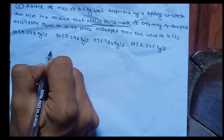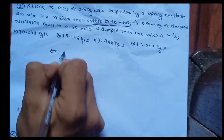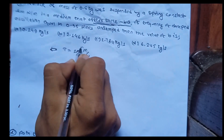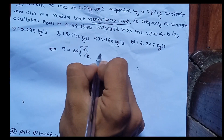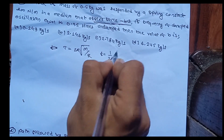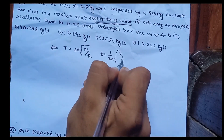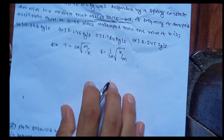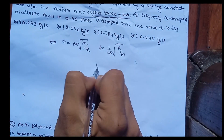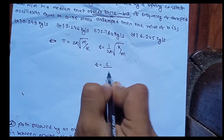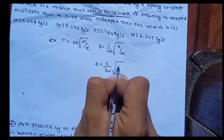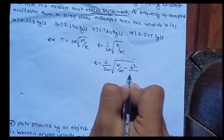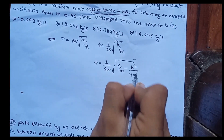The undamped oscillation frequency formula is: omega = 2*pi * sqrt(k/m). So the frequency is (1/2pi) * sqrt(k/m). For damped oscillation, the frequency formula becomes (1/2pi) * sqrt(k/m - b²/4m²).